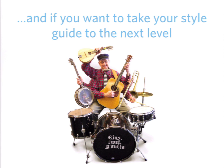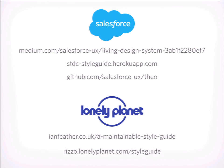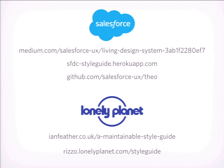If you want to take your style guide to the next level, there are people doing really advanced things. Salesforce has an awesome UX team that wrote an article on Medium called 'How to Create a Living Design System.' They built a tool called Theo, up on GitHub, that can take JSON input and output Sass, Less, Stylus, and code for Android and iOS apps — one repository for all their design properties that they port out to all their different web properties and apps. Lonely Planet is doing cool stuff too: Ian Feather wrote 'The Maintainable Style Guide,' and they built a Component API that turns their style guide into an API that their application can reference directly.